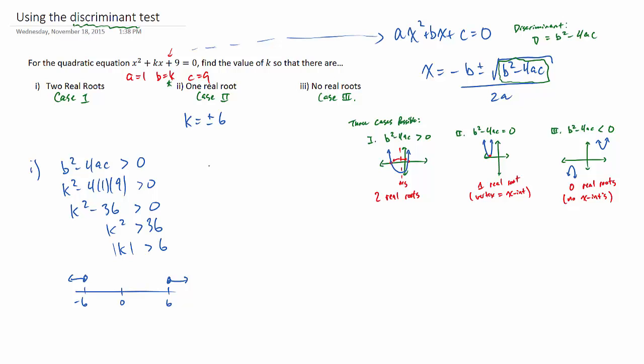Because when we square, say, negative seven, or we square negative eight, it's still going to be greater than 36. So as long as we're outside of the sixes, we're good.